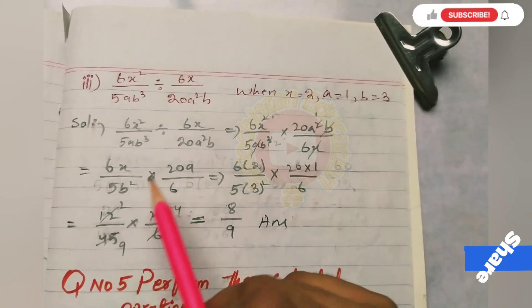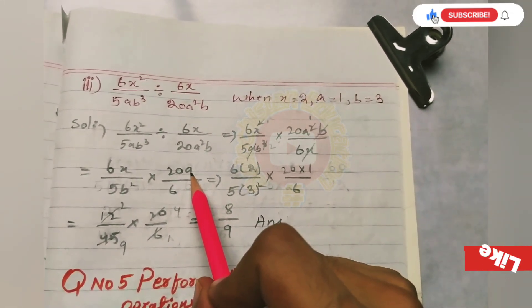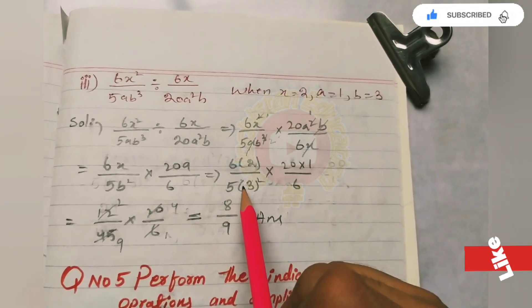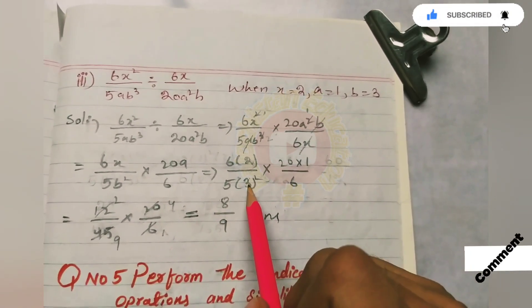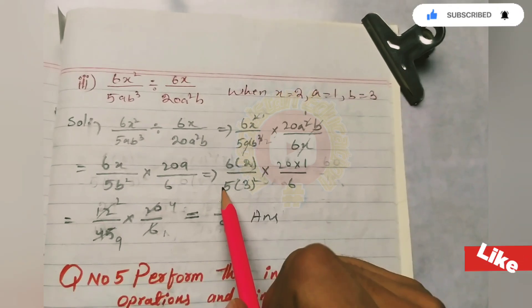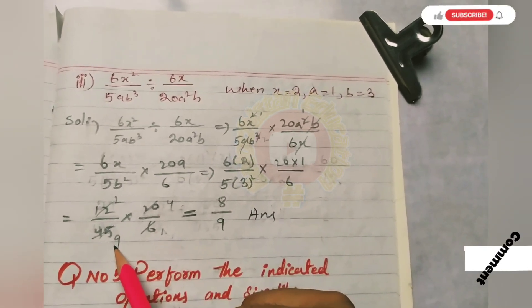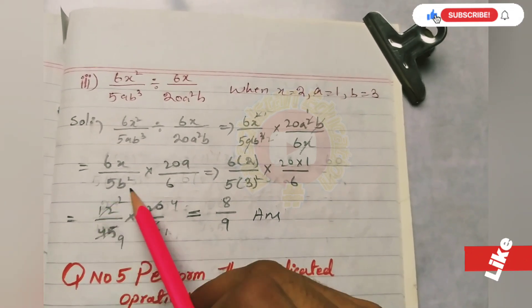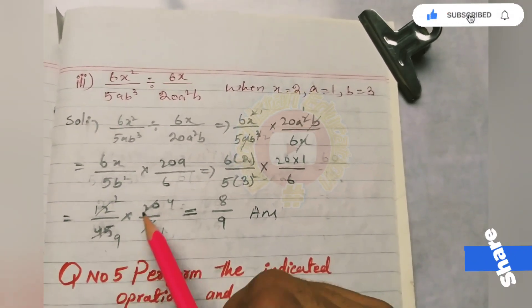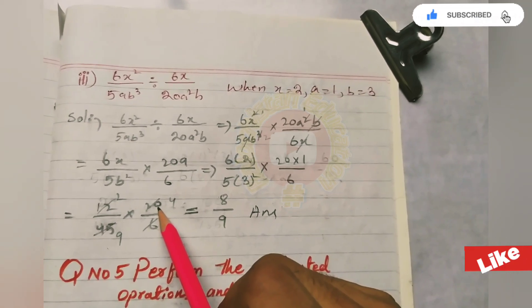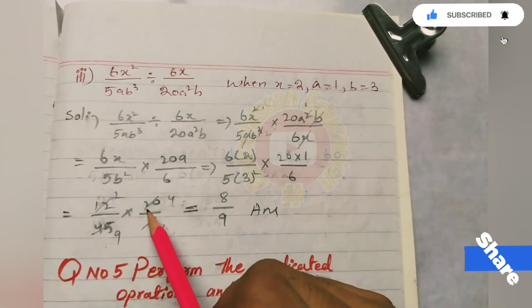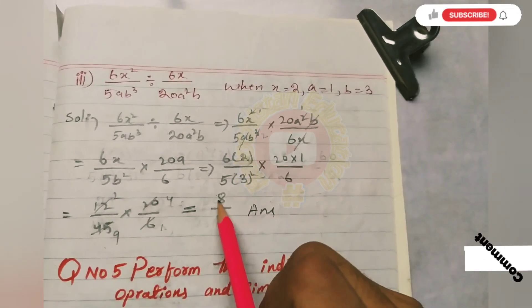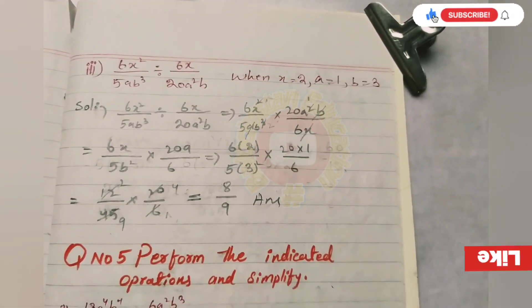So here on the other side, 3 times 3 is 9, 9 multiplied by 5 equals 45 and 6 as it is. 6 times 2 is 12 and we can cut these two. 5 times 4 is 20, 5 times 9 is 45. 4 times 2 is 8, 9 times 1 is 9. This is our answer. So with this, question number 4 is complete.